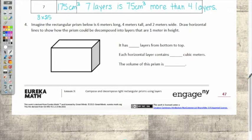So here's what it says. Imagine the rectangular prison below is six meters long, four meters tall, and two meters wide. Hey, wait a minute. I think we have length times height times width. It doesn't matter what order we do those in, does it? No. Okay.